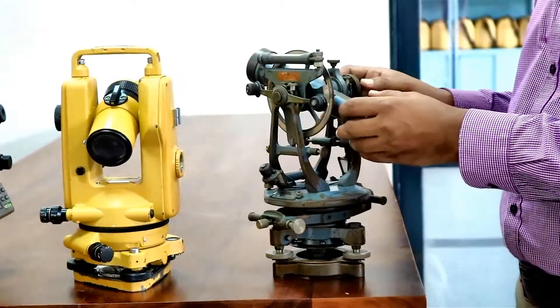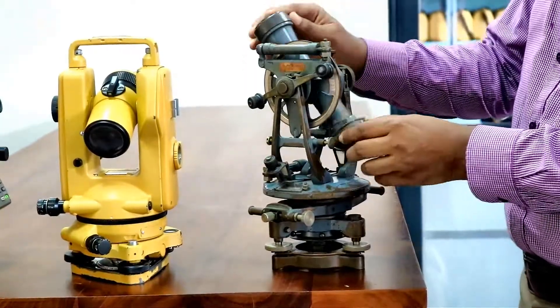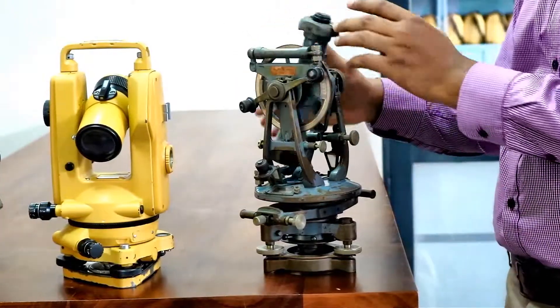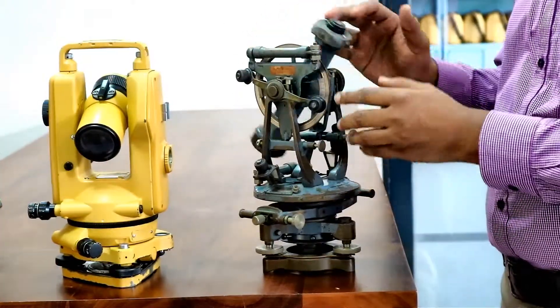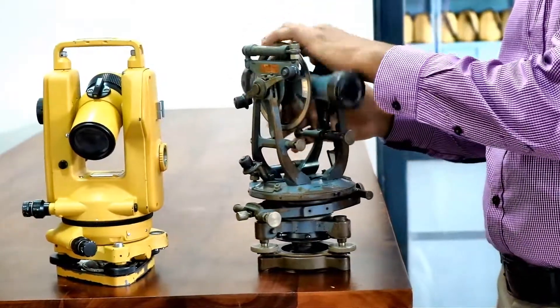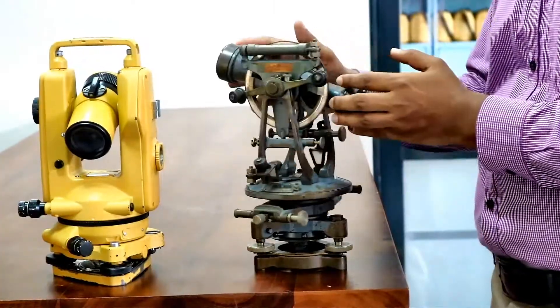In the oldest vernier theodolite, we could not transit the telescope to the other side. That means we couldn't rotate the telescope a full round. But in the vernier transit theodolite, we have that option. We can transit the theodolite fully and therefore it is called the vernier transit theodolite.